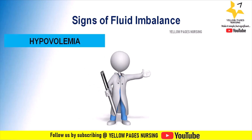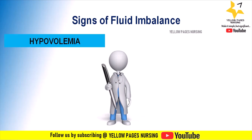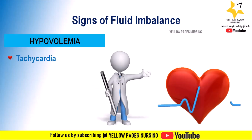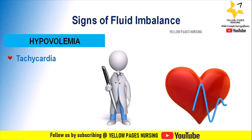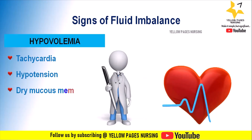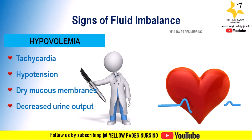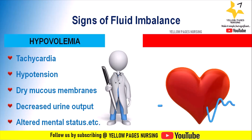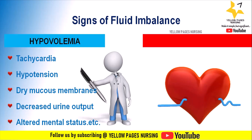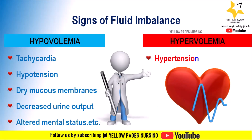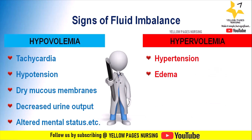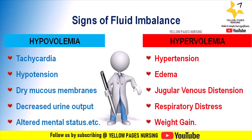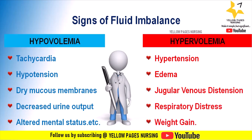Signs of fluid imbalance can be categorized into hypovolemic and hypervolemic states. Signs of hypovolemia include tachycardia, hypotension, dry mucous membranes, decreased urine output, and altered mental status. Hypervolemia is indicated by hypertension, edema, jugular venous distension, respiratory distress, and weight gain.